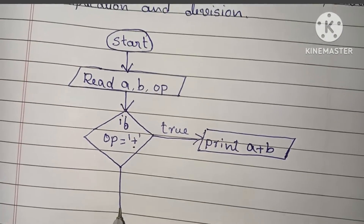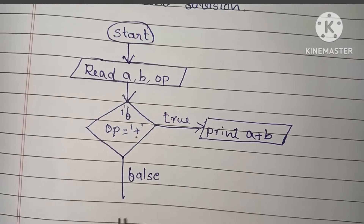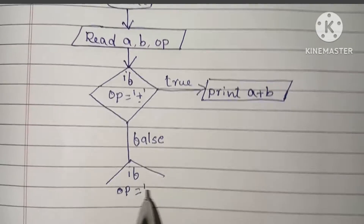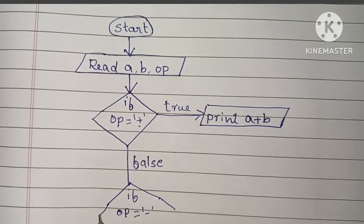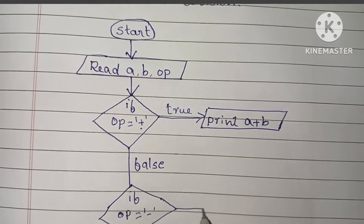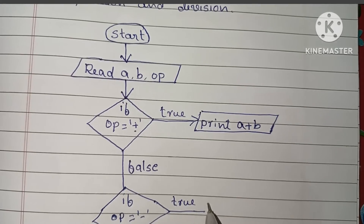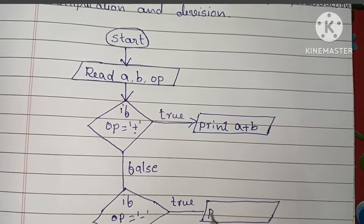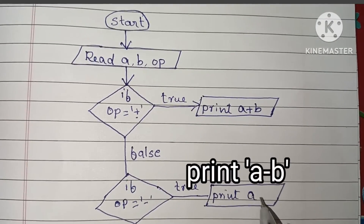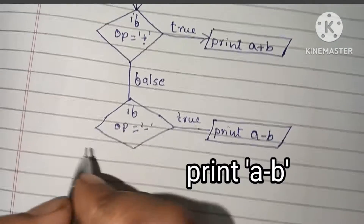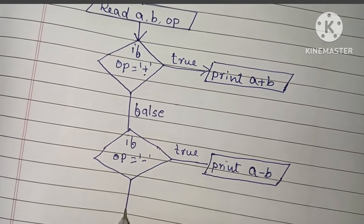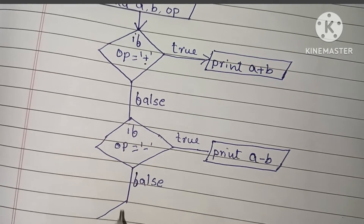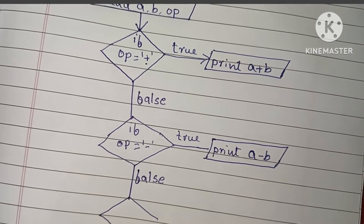If the condition op equal to plus is false, we check again: if op is equal to minus. If this condition is true, we have to perform subtraction, so we print a minus b.